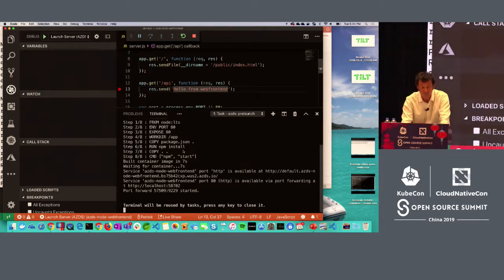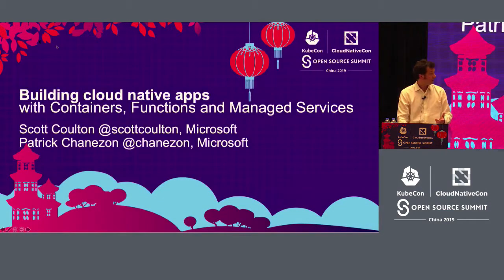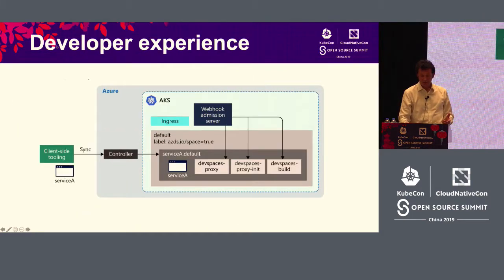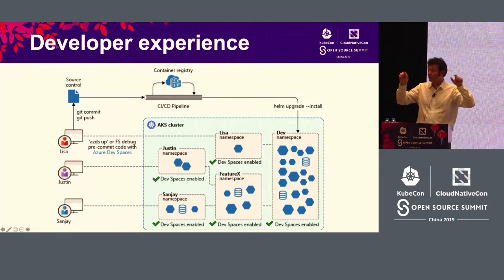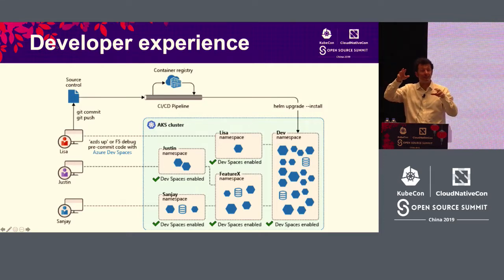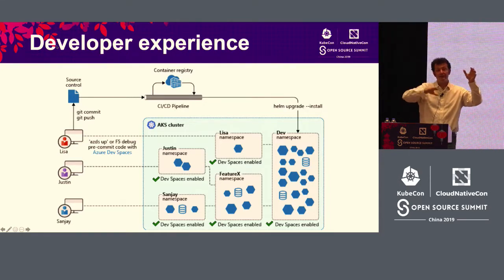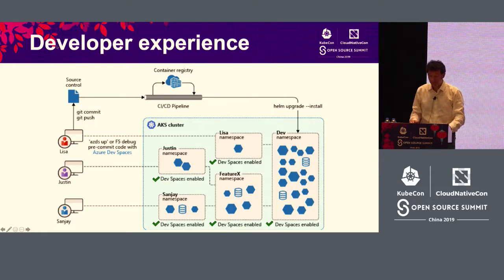In addition to that, AZDS has a few interesting features. With the URLs it creates, you can have different branches so that one developer can have their own version of a certain part of a multi-service app running at a specific URL, while the rest of the team uses the same shared services. It's really designed for teams collaborating on applications that use lots of services in common.